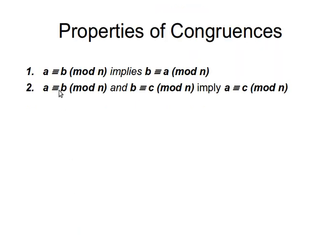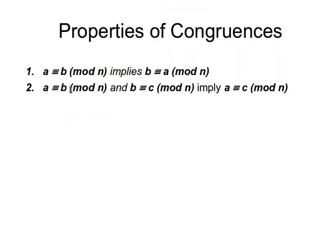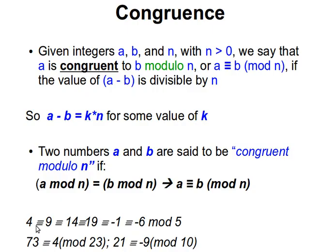Another one is that if I have, for example, A is congruent to B modulo N and I have B is congruent to C modulo N. That means A is congruent to C modulo N. So we again had a similar example here, but now with multiple numbers, not three. So here we have A, B and C. But here we have, you know, four, nine, fourteen, nineteen, minus one, and minus six. Any two of these integers are congruent modulo 5. I hope that makes sense.